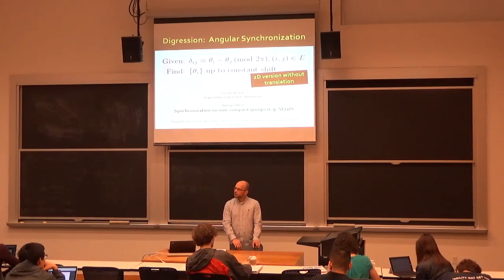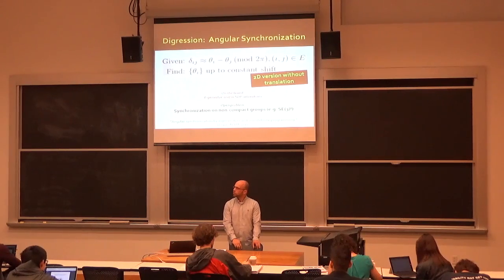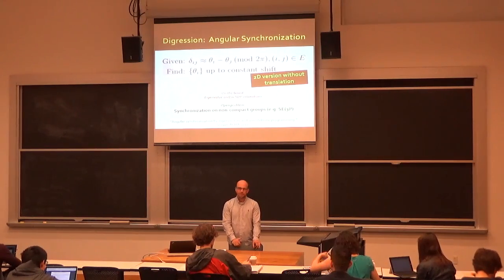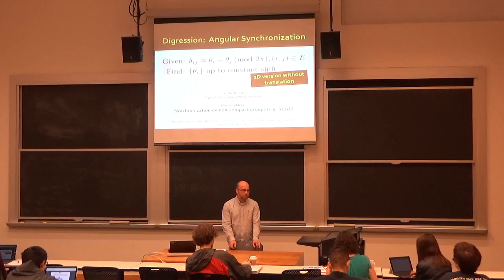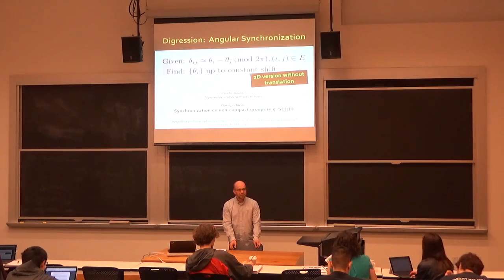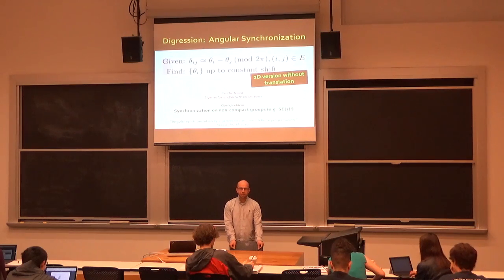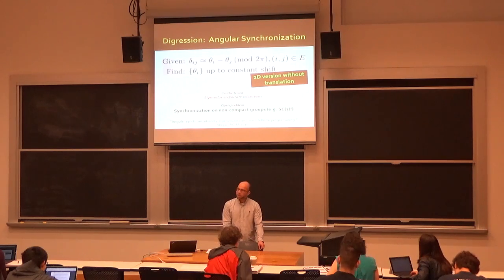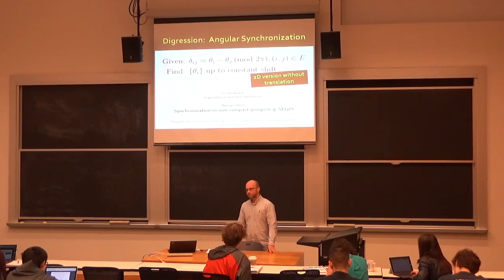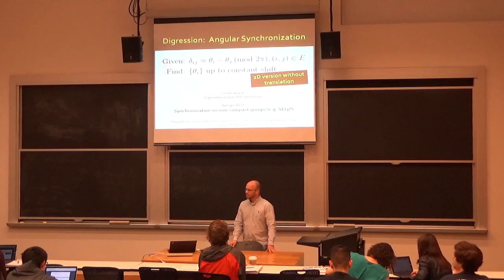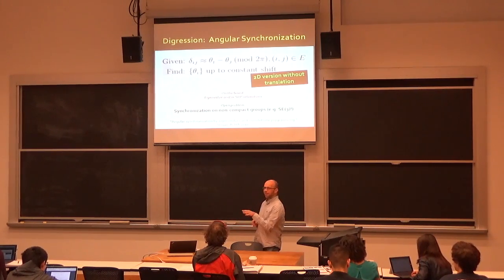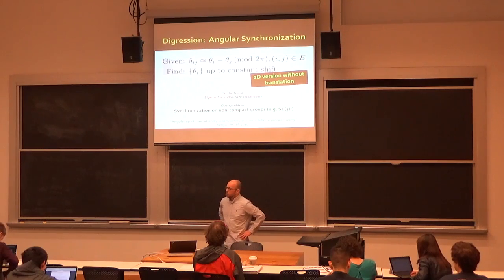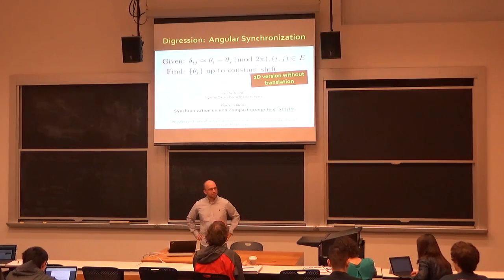One issue with ICP is that it only aligns two surfaces at a time. Beyond that, ICP is very prone to error — it really depends on your initial estimate. So both of those things together mean that if I want to align a whole collection of scans or 3D objects, it's not smart to align them all using ICP independently, and it's pretty easy to break them.